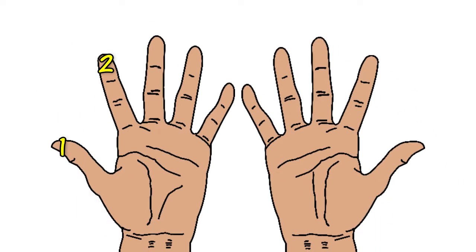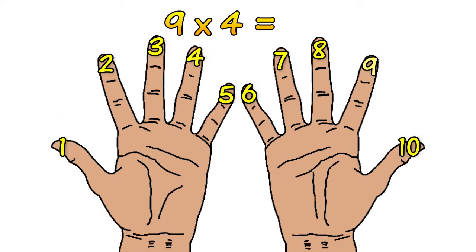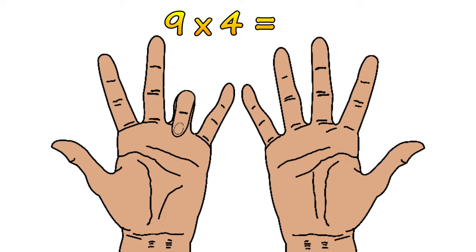Let's take a look at another example. Say we want to work out what 9 times 4 is. So we find the 4th finger and we put it down. We count how many digits there are on the left side of the 4th finger. In this case there are 3. Put that in the answer line.